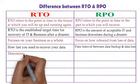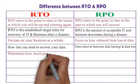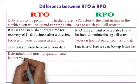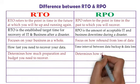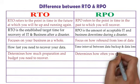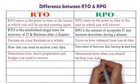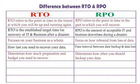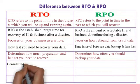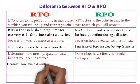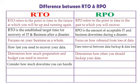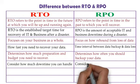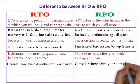RTO determines how much preparation and budget you need to recover. And for RPO, it determines how often you should back up your data. In the side of RTO, it considers how much downtime you can handle. And for RPO, it considers how often your data changes.